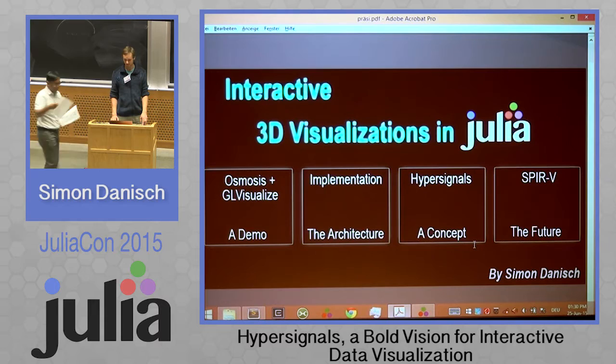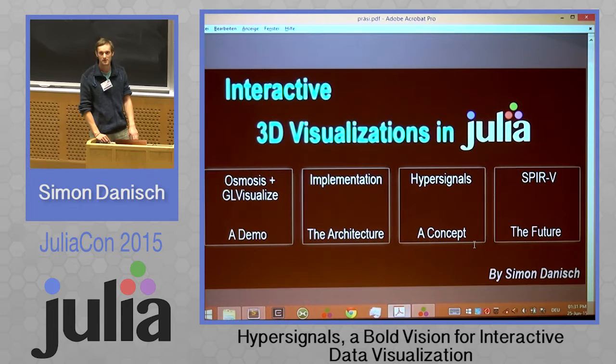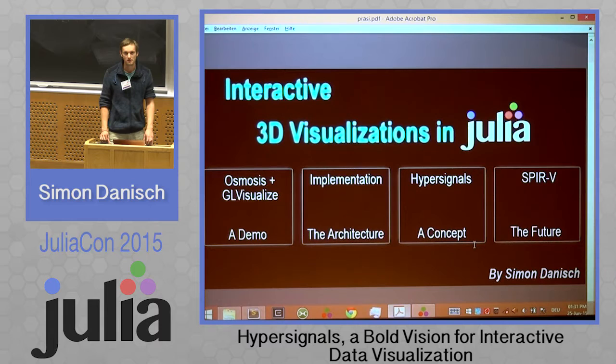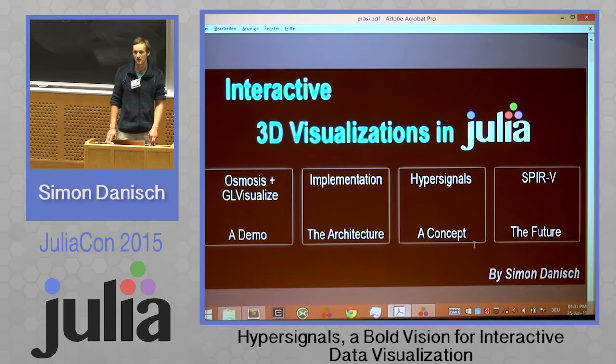I'm talking about 3D visualizations purely implemented in Julia and OpenGL to get top speed. My presentation is structured so that I first give you a demo of my software, then tell you a little about the implementation and point out a few problems I'm currently having, which I want to solve with a concept called Hypersignals. From there I'll give a short glimpse into the future of what I hope Julia will look like with 3D visualizations.